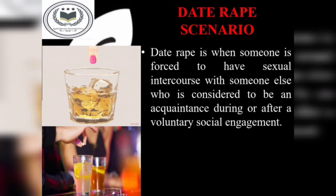In date rape scenarios, someone is forced to have sexual intercourse in an involuntary social engagement. A new material has been developed by Undercover Colors Nail Polish Company which can detect certain rape drugs. Once applied to your fingernails, swirl your finger in your drink — if any drug is present, the nail polish will change color. It can detect rape drugs like GHB and Rohypnol.